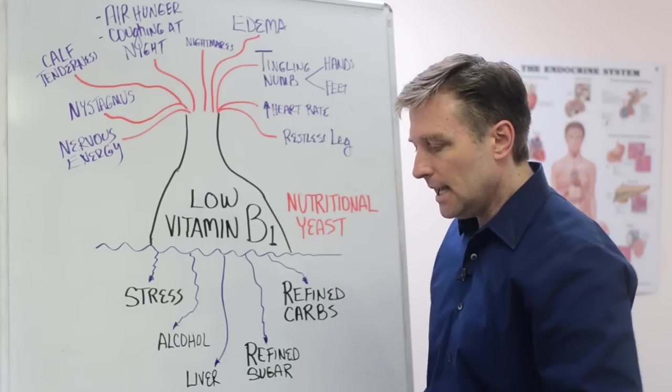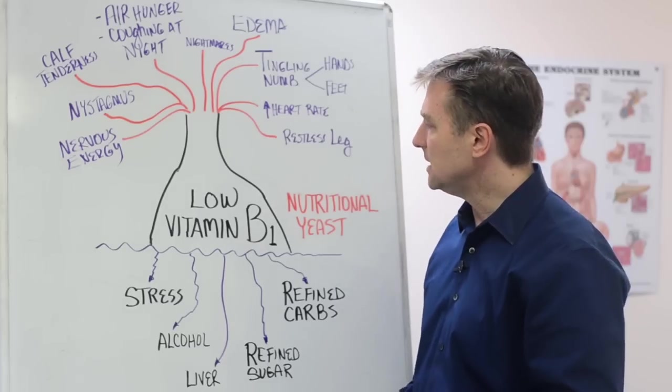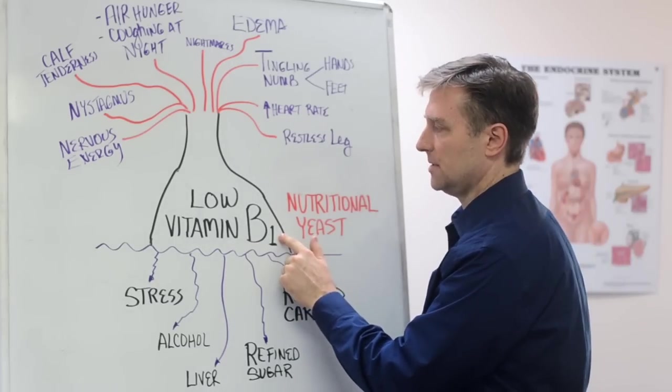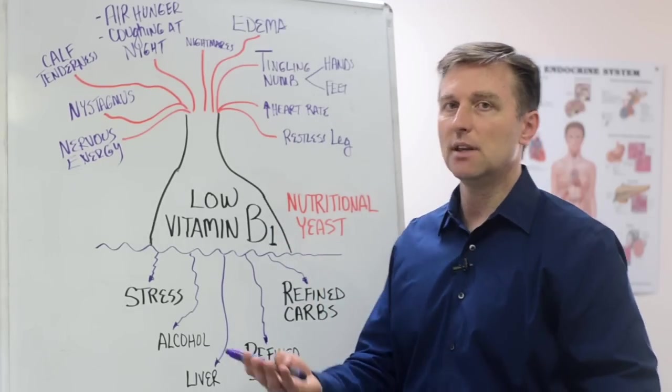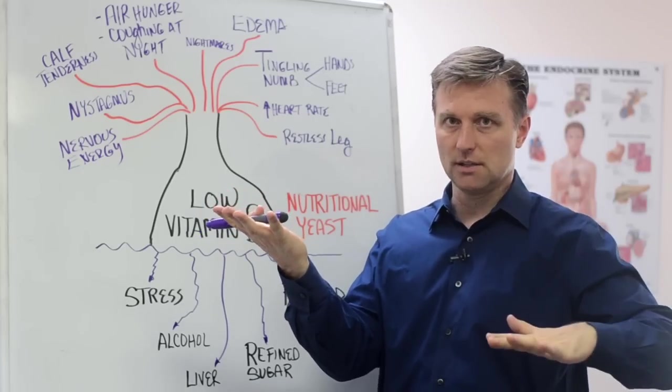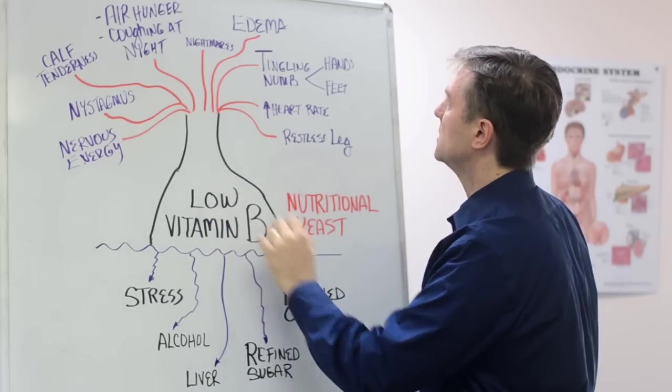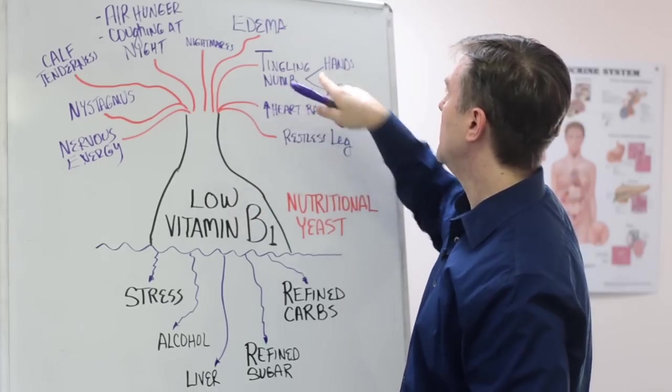In fact, diabetics need about 15 times more B1 than a normal person. They're very, very low in B1. And when you actually give them B1 in a natural form, it actually helps lower their insulin. So it's really good for diabetics. But that's why they get those symptoms because they run out of the B1 and that's the remedy.